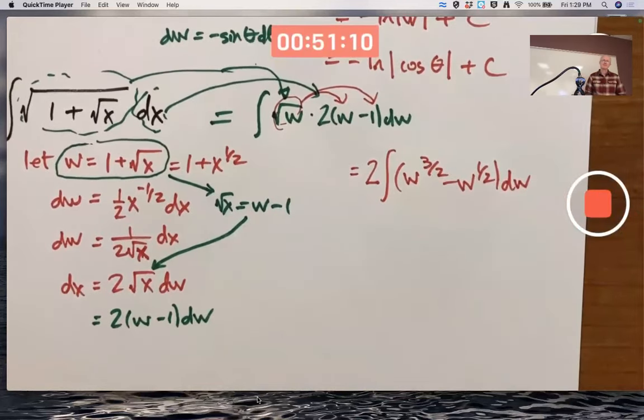Does that make sense? The square root of w is w to the 1 half. Multiply it by w, you'd add the exponents. 1 half plus 1 is 3 halves. And square root of w times 1 is w to the 1 half.